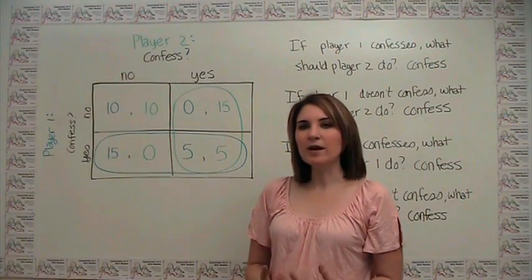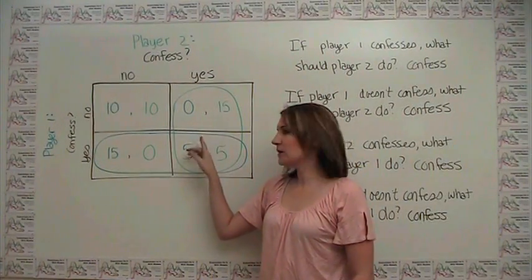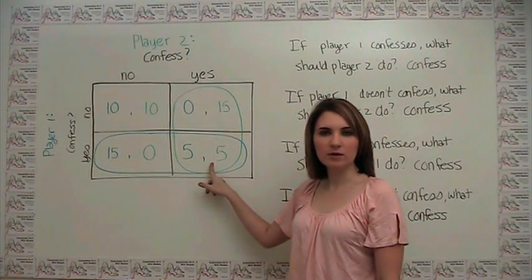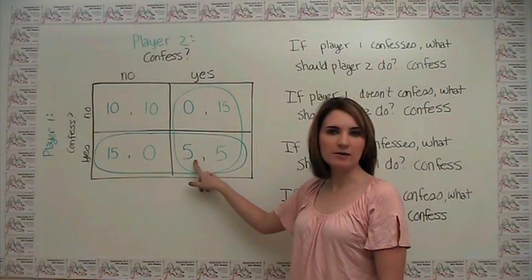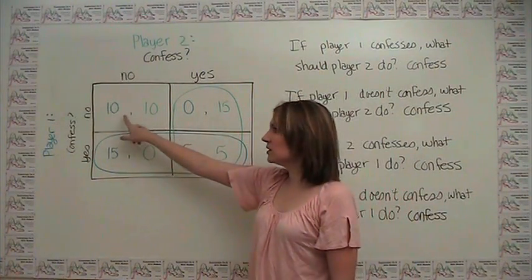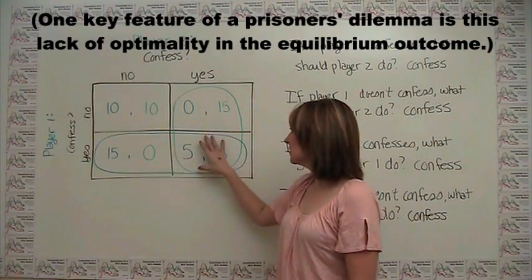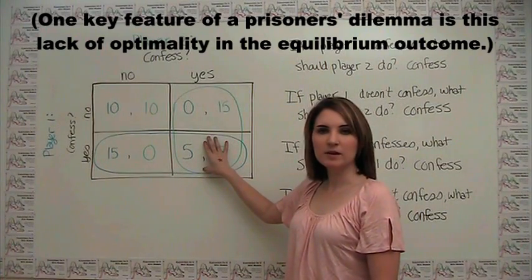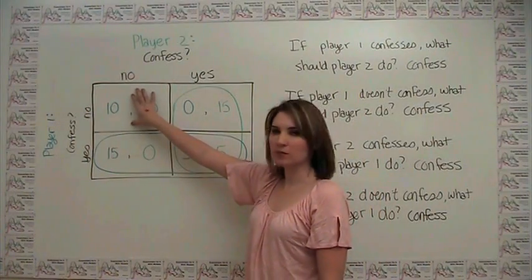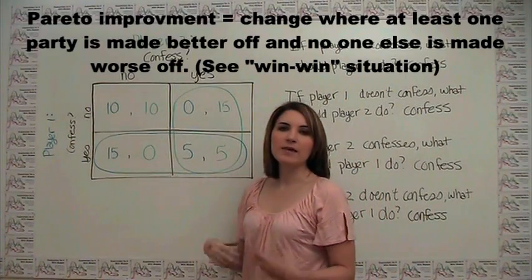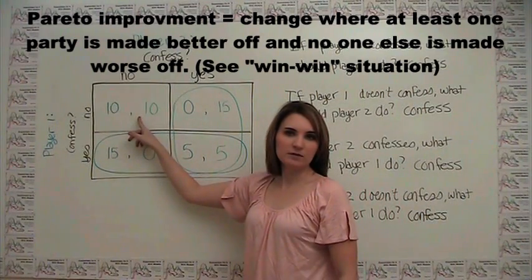Notice here that the equilibrium outcome actually doesn't look as good as it could. Because here we're saying that in equilibrium, when people are acting according to their own best interests, each of them ends up with a payout of 5, whereas if they only cooperated, they would each get a payout of 10. We can say here that there could be a Pareto improvement going from both parties confessing to both parties staying quiet, in that both parties would be made better off, and nobody would be made worse off.